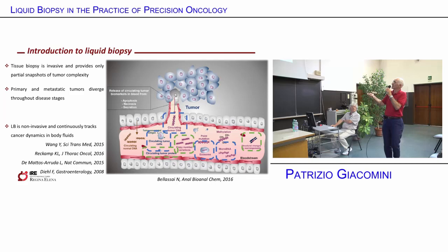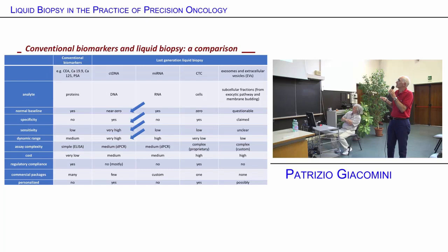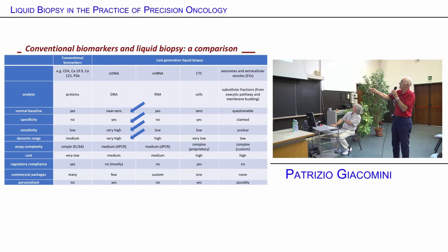Why are next generation biomarkers better and provide more information compared to conventional biomarkers? Think of carcinoembryonic antigen, CA19-9, CA125, prostate specific antigen — and compare these to ctDNA (circulating tumor DNA), microRNAs, circulating tumor cells, and exosomes. Let's focus on these two analytes: the conventional protein markers versus ctDNA.